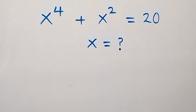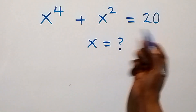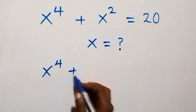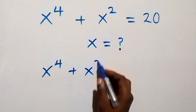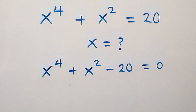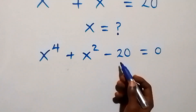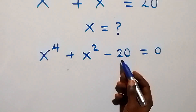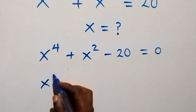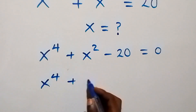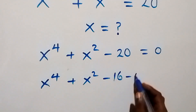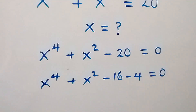Hello, you are welcome. We need to solve for x. Let's take 20 to this side and we have x raised to power 4 plus x squared minus 20 equals zero. From here we can rewrite minus 20 as minus 16 minus 4, so this becomes x raised to power 4 plus x squared minus 16 minus 4 equals zero.